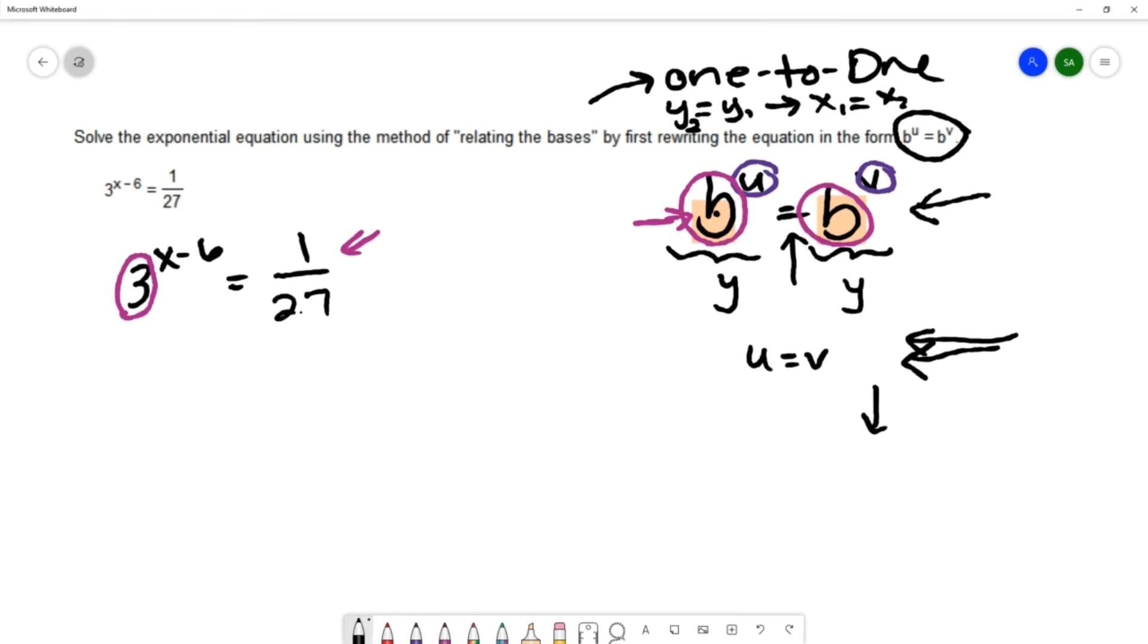27 is the same thing as 3 cubed. So I can write this as 1 over 3 cubed. Now I don't want that in the denominator. So I'm going to move that factor to the numerator. And we can put a negative on the exponent using our exponent properties in order to move that factor to the numerator.